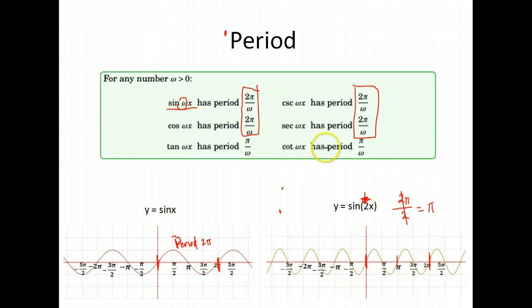For tangent and cotangent, that number multiplied by the x, you just divide π by that number. So for example, if I had the tangent of 2x, its period would be π over 2.